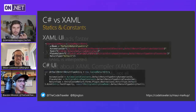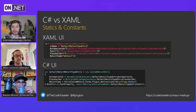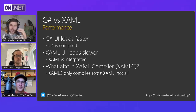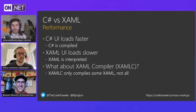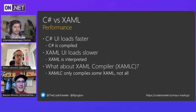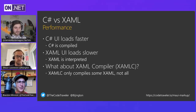The XAML compiler does get it pretty close, so the difference is mostly negligible now, but C# UI will always load just a little bit faster. Compiled bindings will also help load things even faster, so I highly recommend those for XAML users too — you just have to remember to do it. XAML compilation is now on by default in all .NET MAUI applications, which is also awesome.